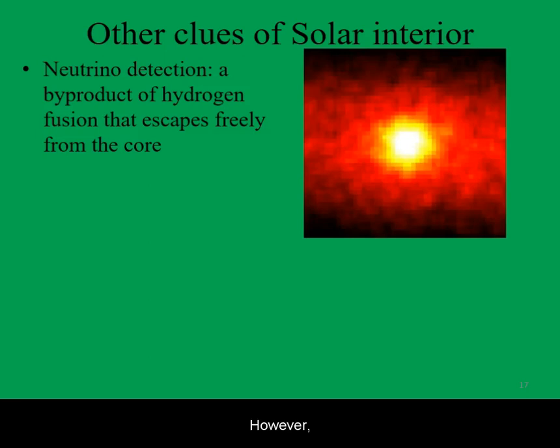However, neutrino detectors from around the world have confirmed that the vast majority of neutrinos arriving at the Earth come from the direction of the Sun.